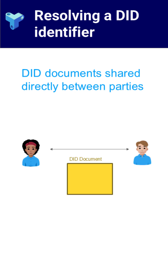DID:peer takes a peer-to-peer approach. These DIDs are designed for private, pairwise interactions and are not globally resolvable. Instead, the DID document is directly exchanged between parties during connection establishment. This method maximizes privacy and avoids reliance on global infrastructure, but it requires secure and trusted communication at the time of exchange.